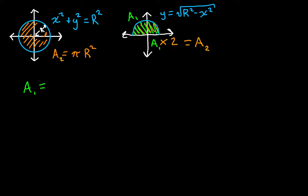Area 1 is just the area under that curve. So we are taking the integral from negative r to r on the x-axis — that's how far the circle reaches — to positive r of our curve, which is the square root of r squared minus x squared, with respect to x. You should be familiar with integration by now; if not, maybe watch videos on that first. So we're going to set this area up as the integral from negative r to r of y equals the square root of r squared minus x squared, dx.